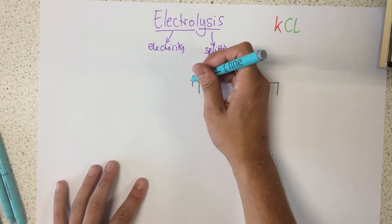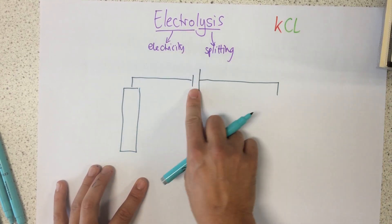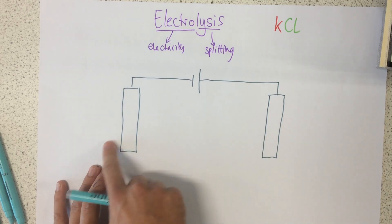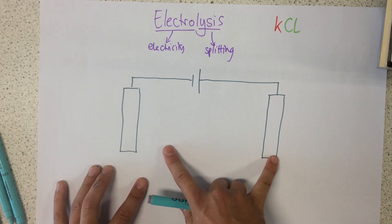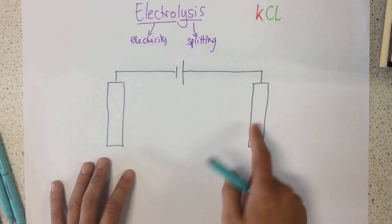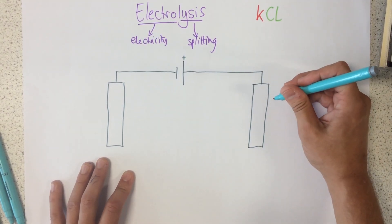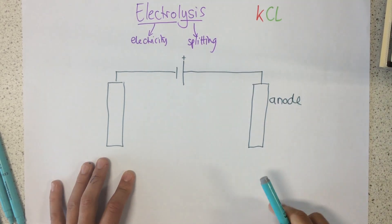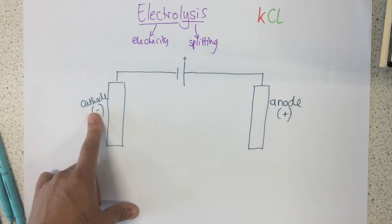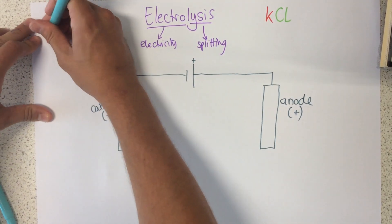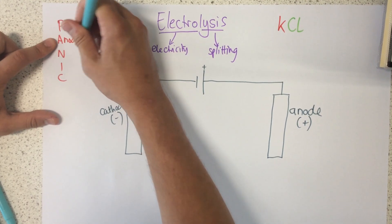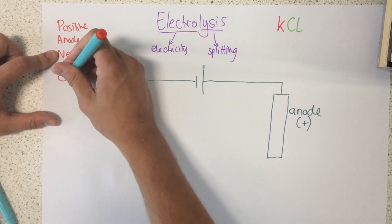For electrolysis to happen, we need a power supply and an electric current, and we need two electrodes. These electrodes are often made out of things such as graphite. It's important that they are inert or unreactive. This electrode here is the positive one, called the anode, and cathode is the name of the negative one. There's a nice way of remembering this using the word PANIC — positive anode, negative is cathode.